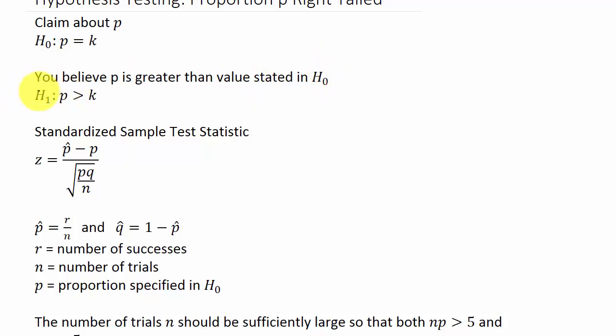Our alternate hypothesis H₁ is saying: we think P might be greater than K.